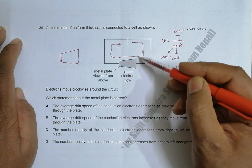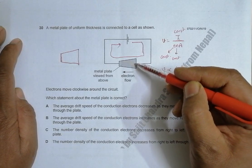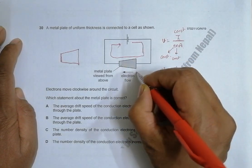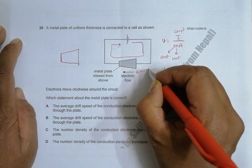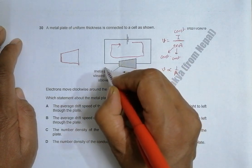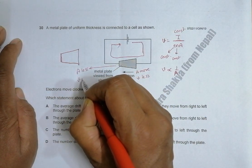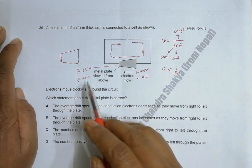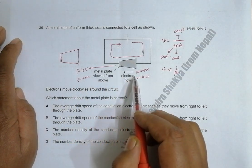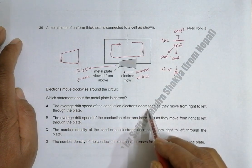So where the area is more — on the right side — v should be less. And where the area is less — on the left side — v should be more. Therefore v is more at the left side and less at the right side.